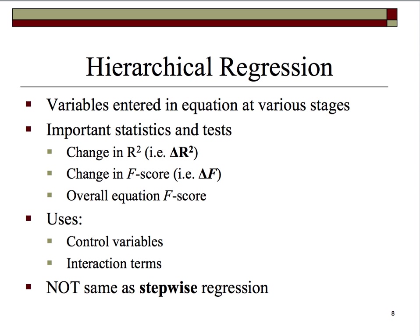Basically, we enter some variables in the prediction of a Y or dependent variable, then ascertain the total amount of variance explained in that criterion. Then, in a second block, we enter in other variables and assess the additional variance explained. This gives us some important statistics and tests associated with hierarchical regression.